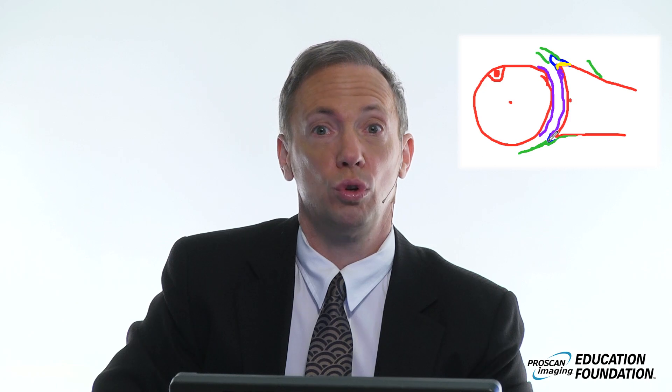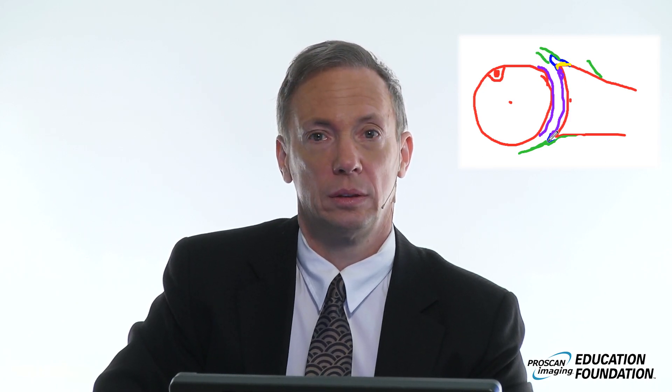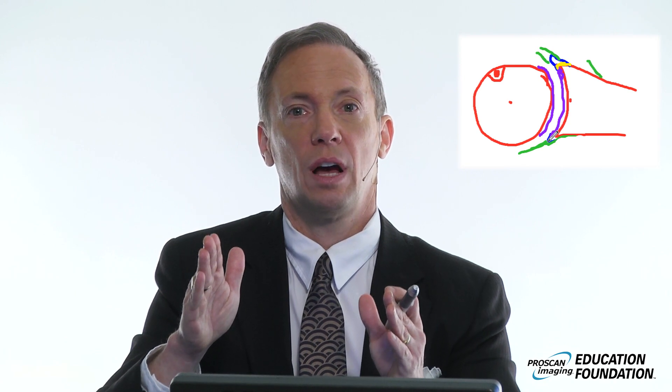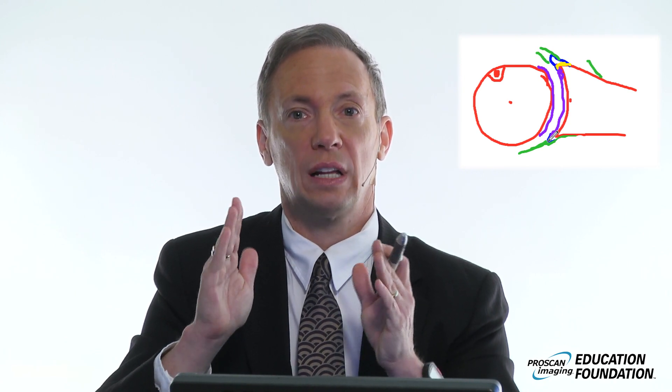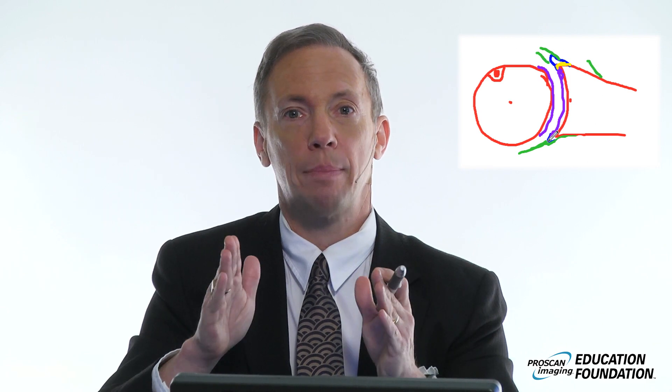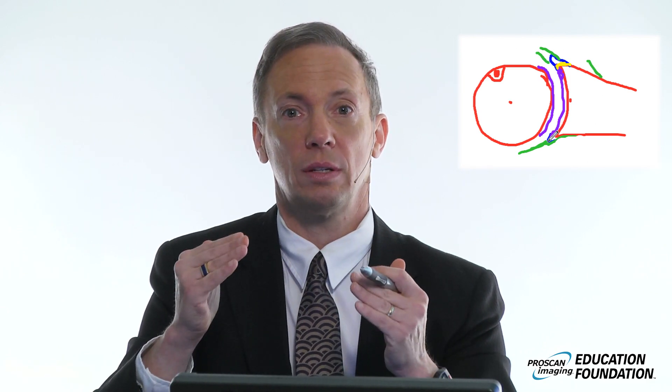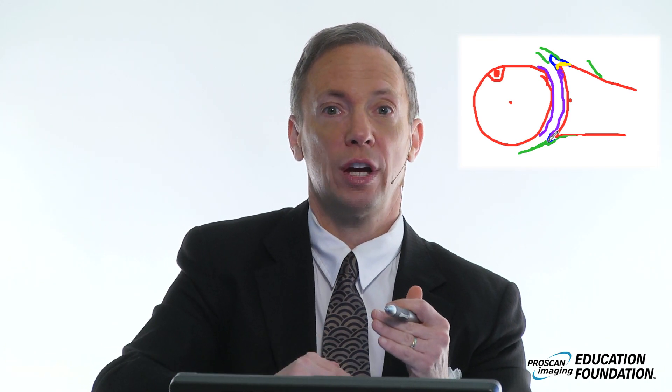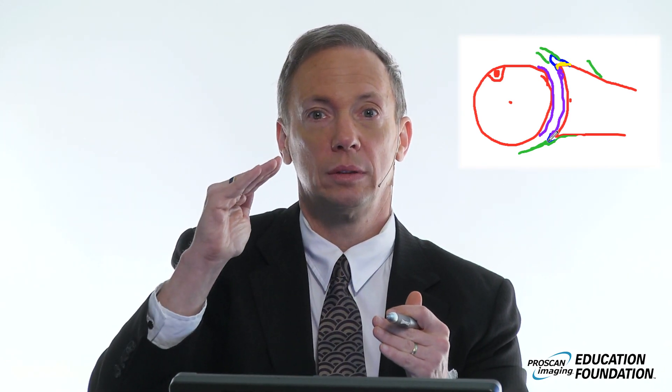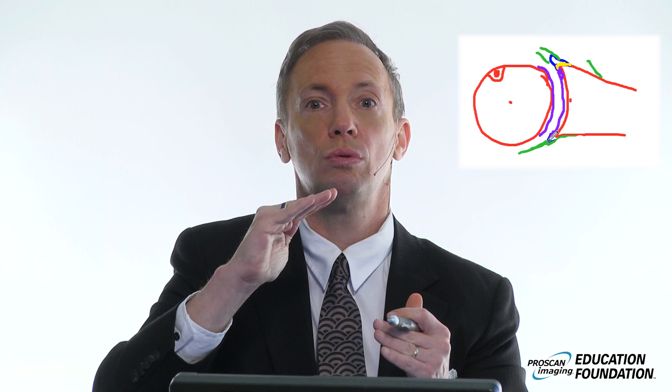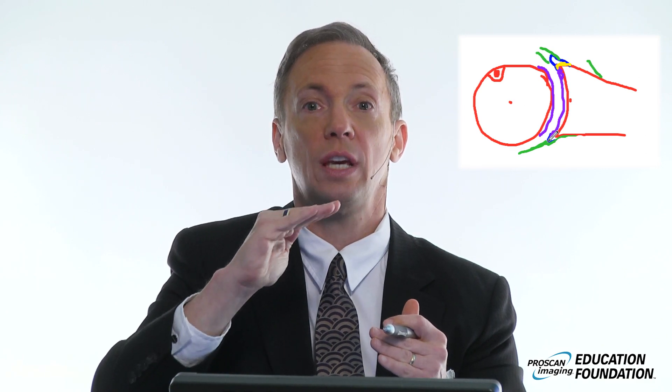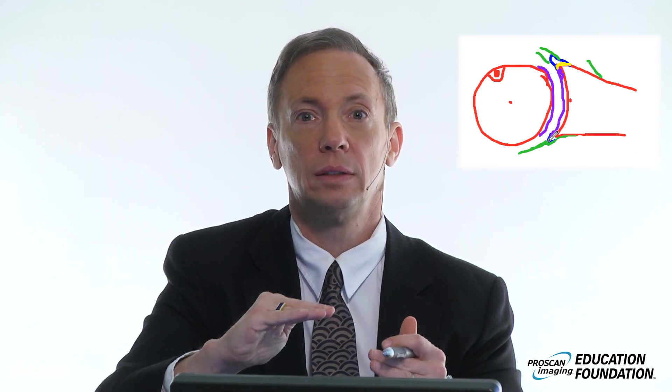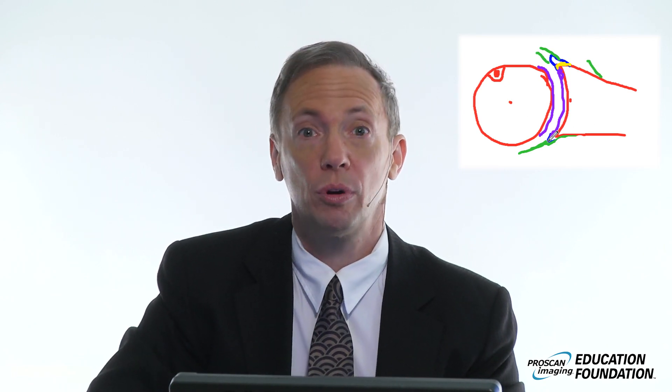So Golden Rule Number One: variations in the relationship of the labrum relative to clefts and sulci and flaps are inconsistent and are much more common in the axial projection in the upper quadrant. And as you achieve lower quadrant status below the equator, they go away and they should not be present.